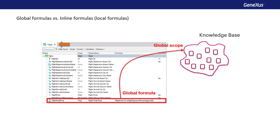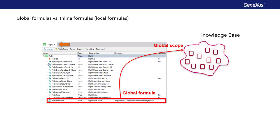However, the global formula attribute is associated with the table to which it would have belonged if it had not been defined as a formula. This associated table represents the context of the formula. That is, at the moment the formula is triggered, it's positioned in a certain record of that table. Only attributes can be defined as global formulas and not variables, since attributes have global scope in the knowledge base, while the scope of variables is limited to the object where they were defined.